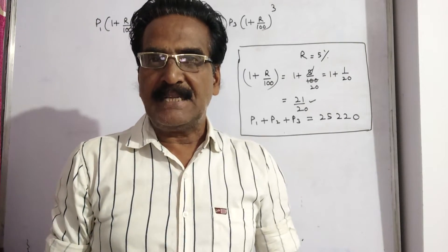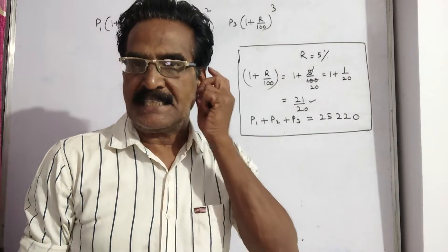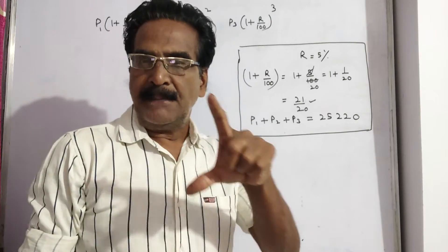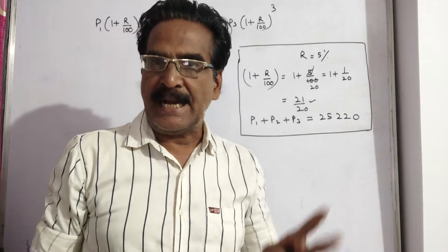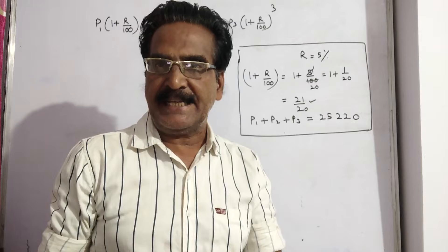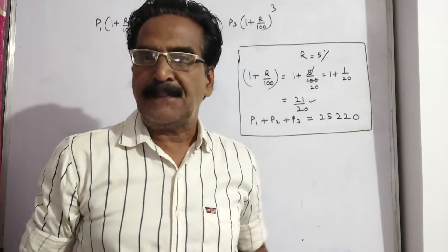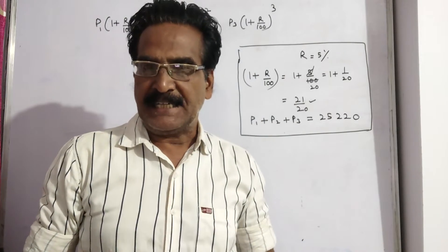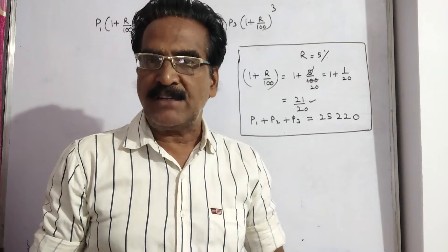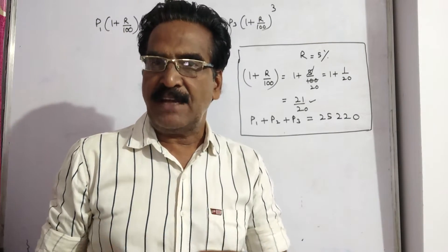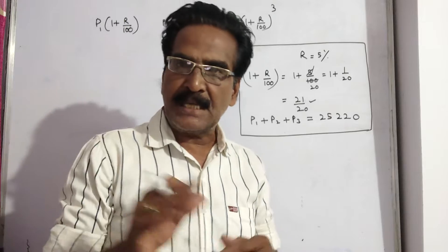Hi friends, good morning. Please look at the next problem in compound interest. A man borrows 25,220 and undertakes to pay back at 5% compound interest per annum in three equal annual installments. What is the value of each installment is the problem.